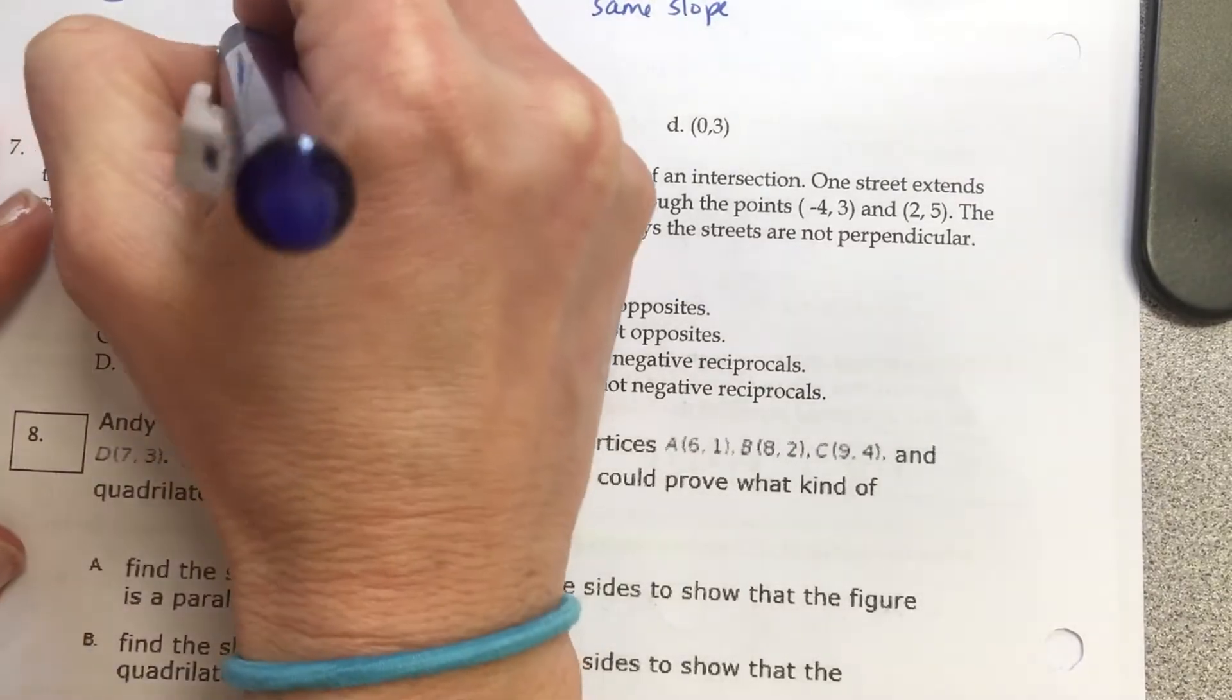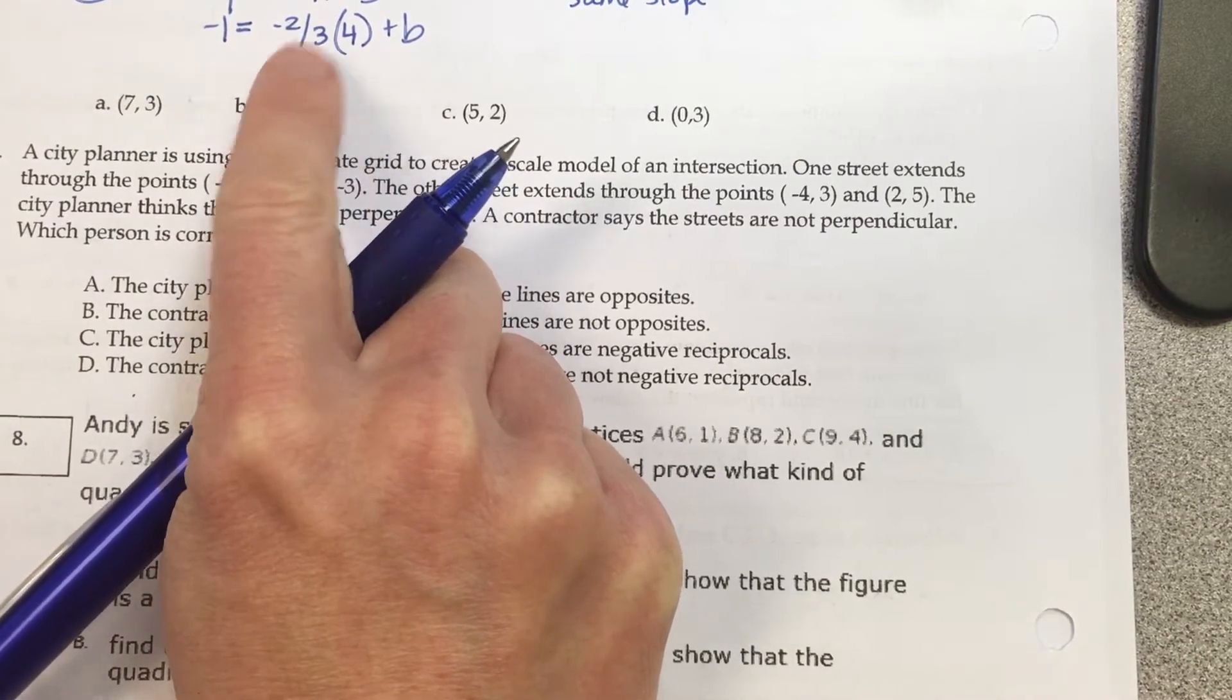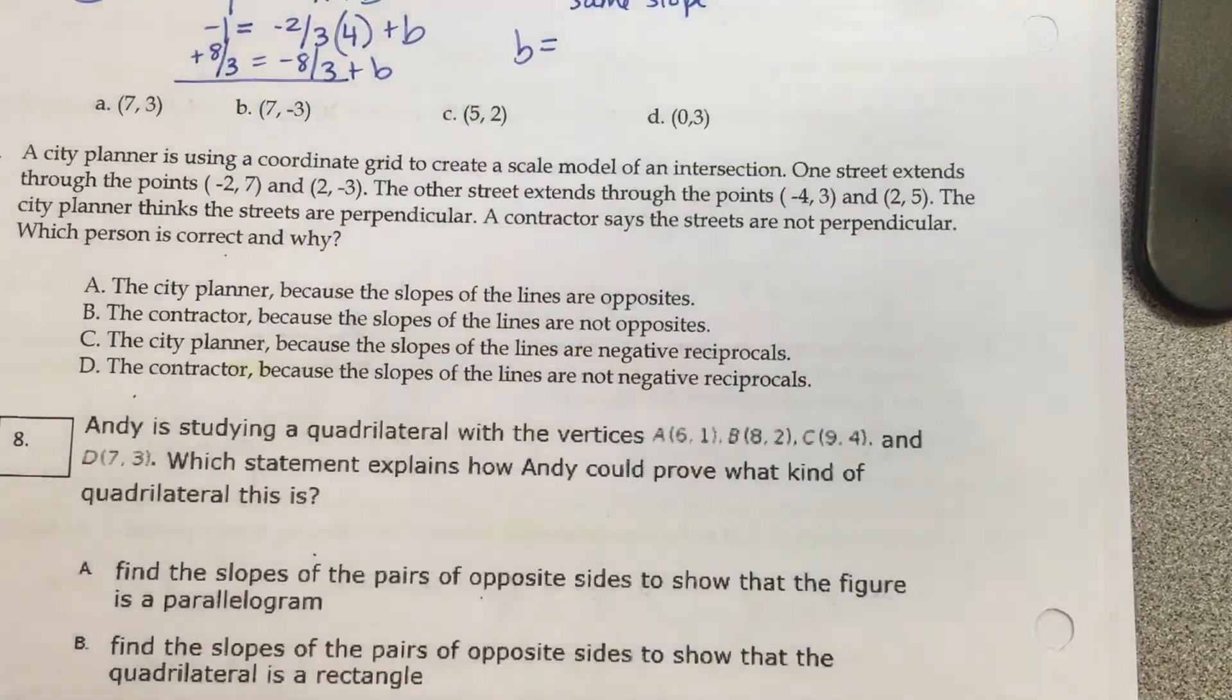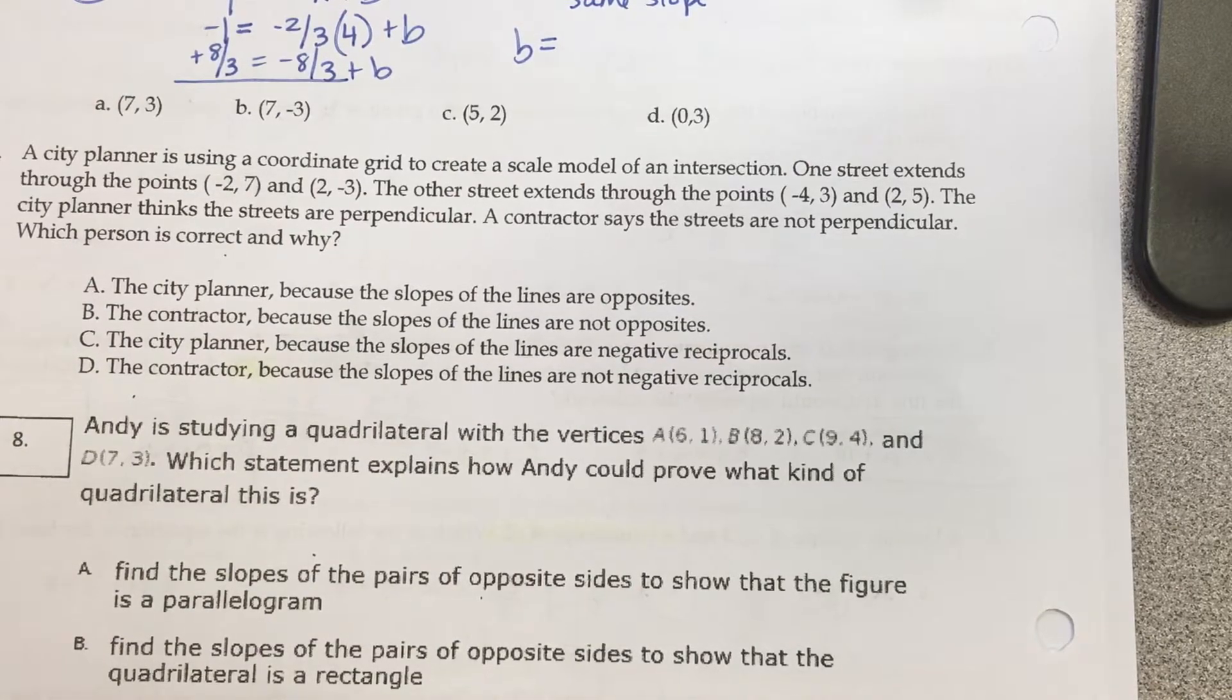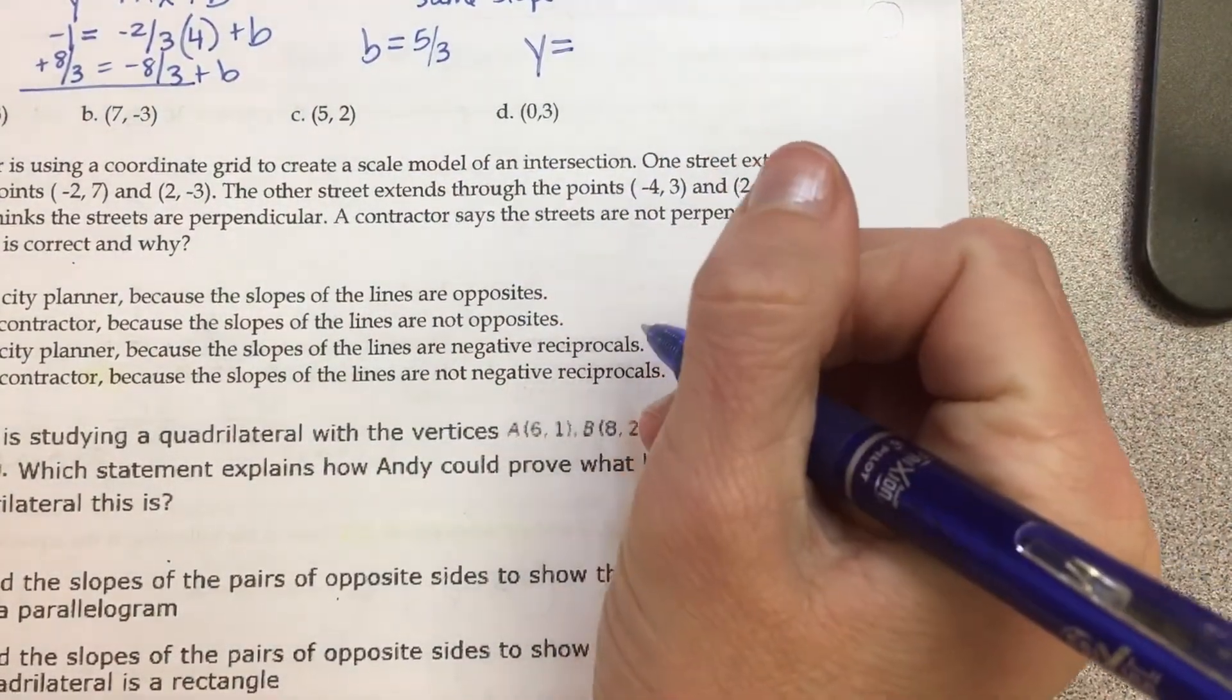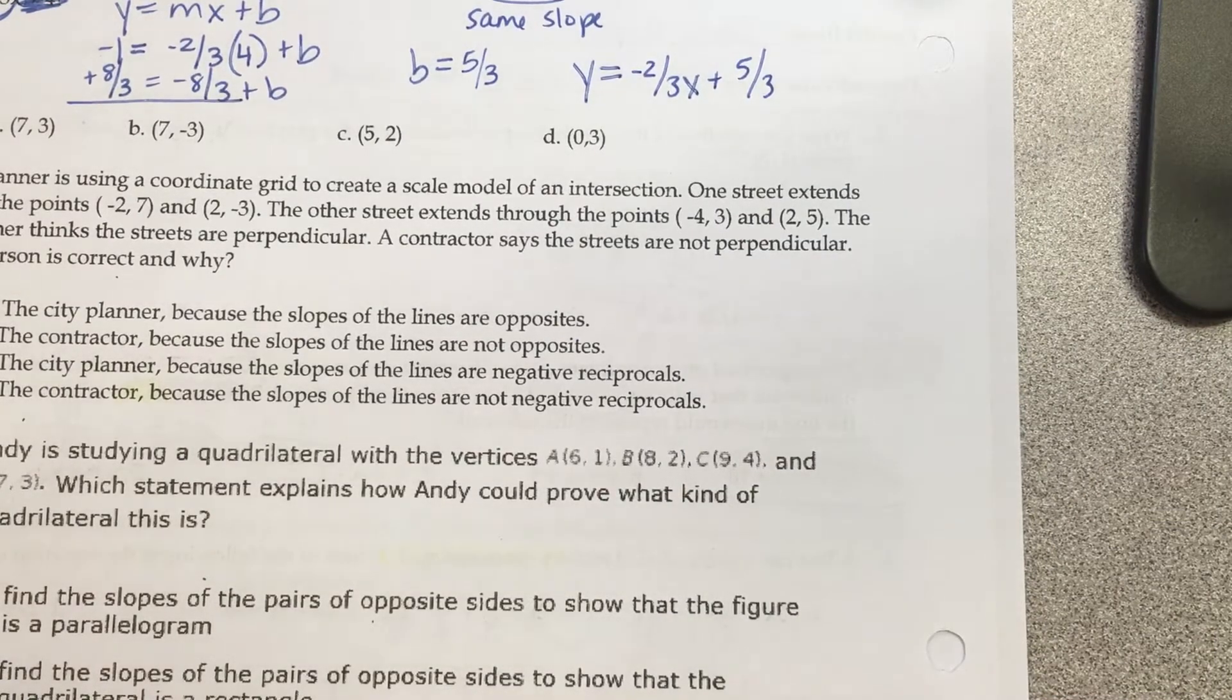What goes in for y? Negative 1. What goes in for m? Negative 2/3. And what goes in for x? 4. Somebody in your calculator, negative 2/3 times 4 - that's negative 8/3. And then when you move it to the other side, you have to add it. What do you get b to be? Negative 1 plus 8/3 equals 5 over 3. How would I write the equation? Y equals negative 2 over 3x plus 5 over 3.